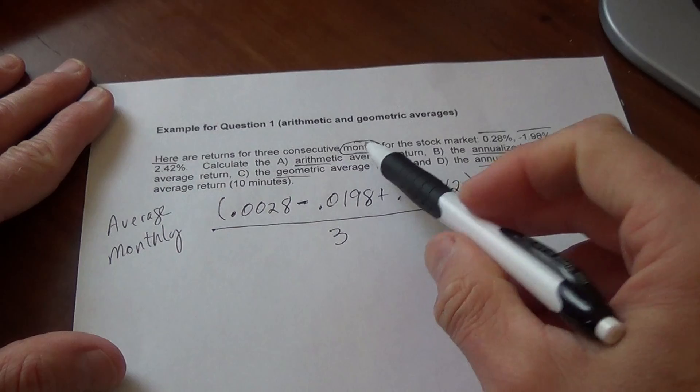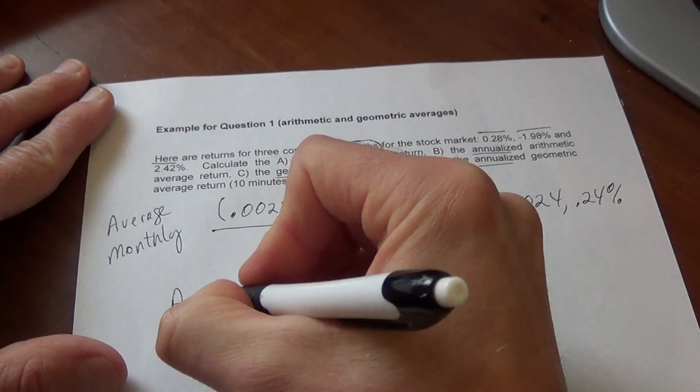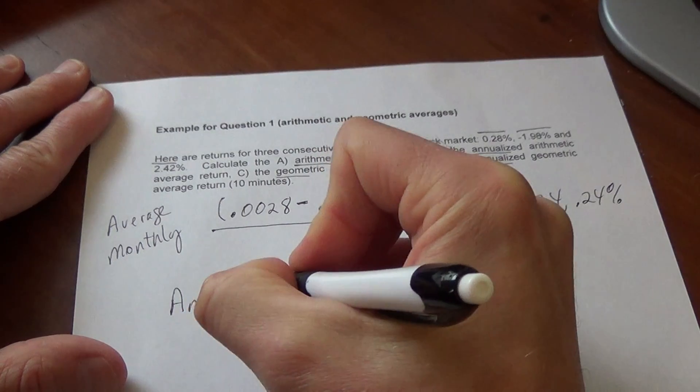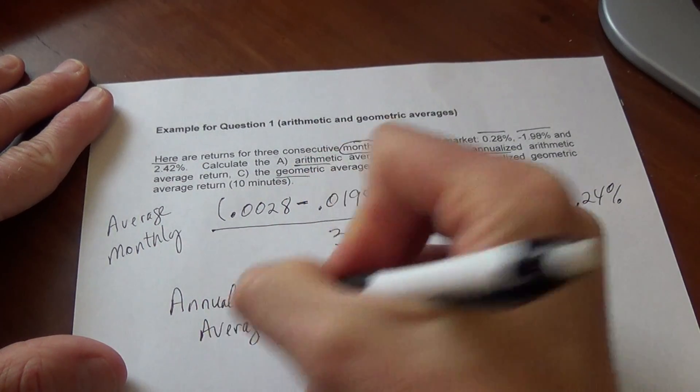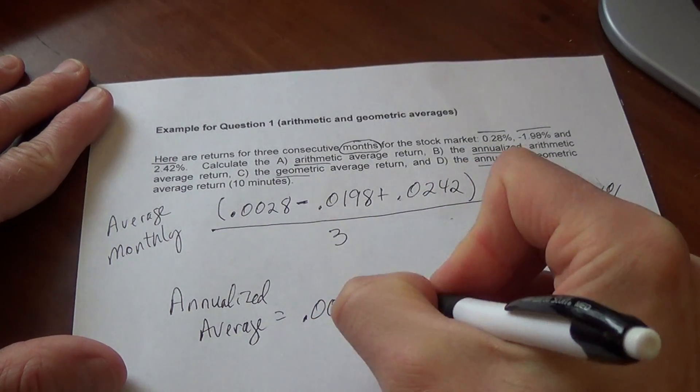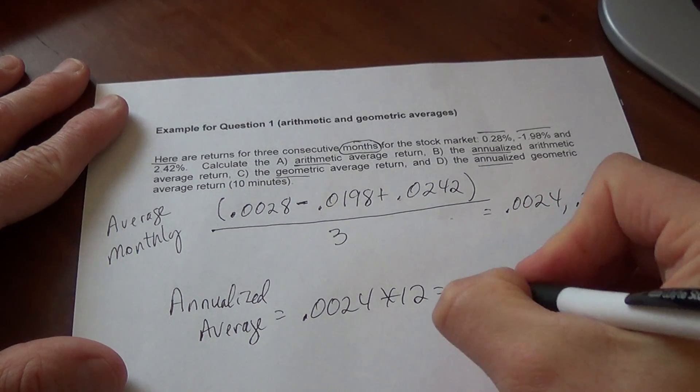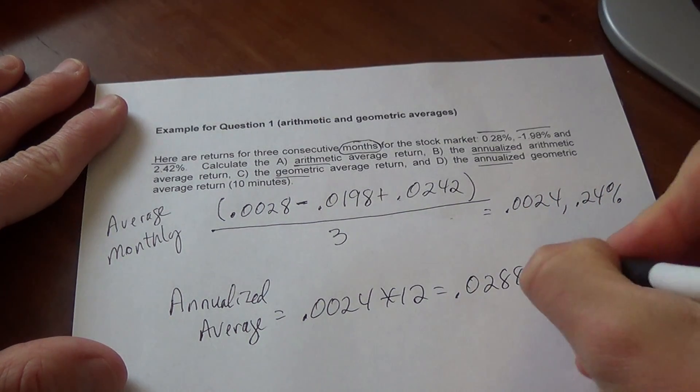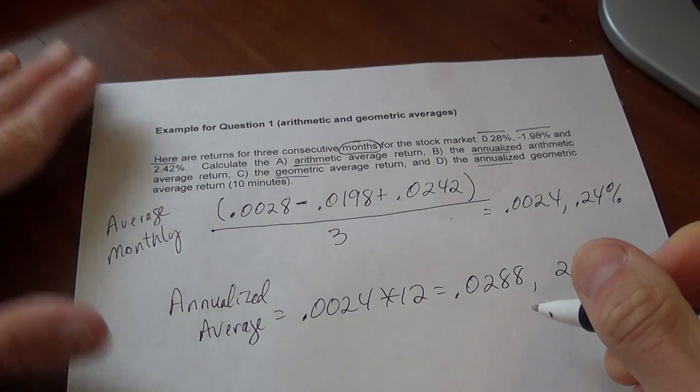If this had been weekly, we would multiply by 52 because there's 52 weeks in the year. So the annualized average is the monthly average, 0.0024 times 12, and that gives us an annualized number, 0.0288 or 2.88%.